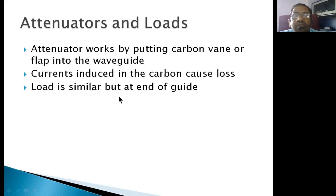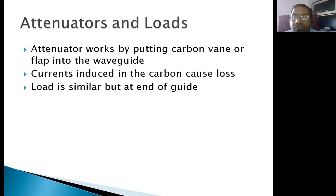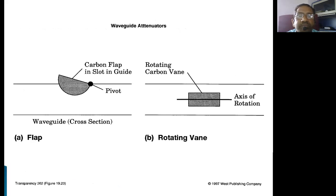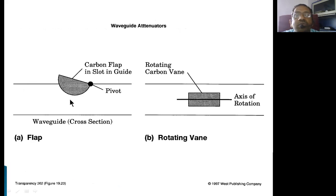A load is a similar waveguide structure, but placed at the end of the waveguide. Various loads include shorts, detector mounts, and vane circuits. The carbon flap is inserted into a slot provided in the waveguide to achieve attenuation. A rotating carbon vane can also be used — by simply rotating this carbon vane we can vary the amount of attenuation obtained.